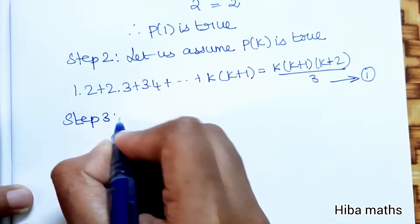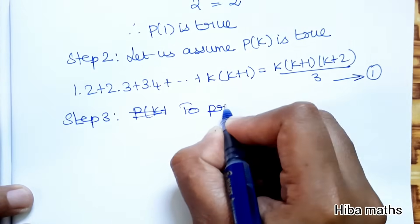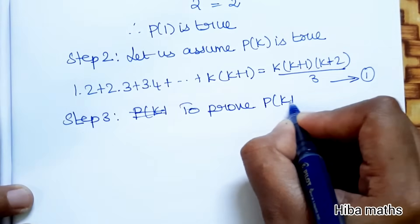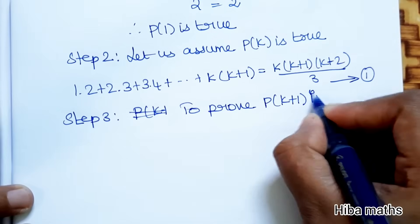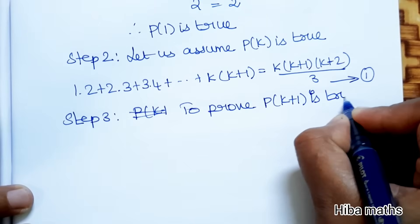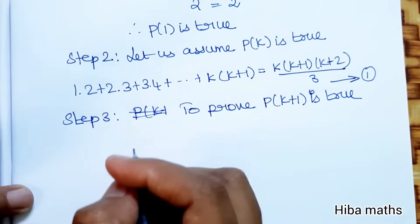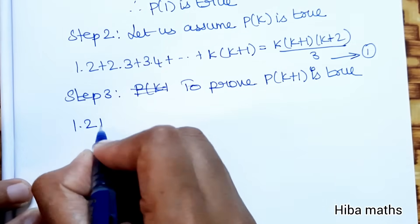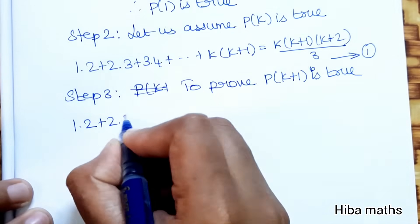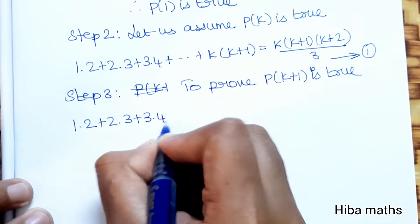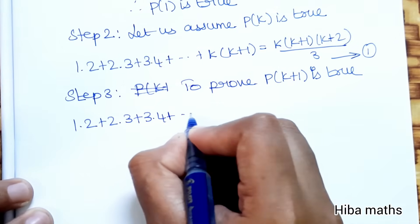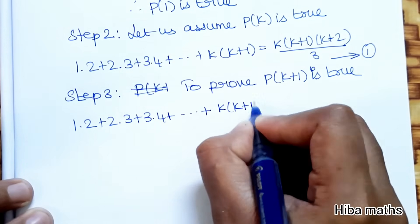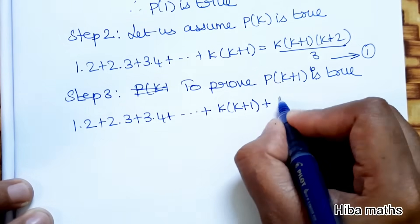Step 3: To prove P(k+1) is true. We need to show: 1·2 + 2·3 + 3·4 + ... + k(k+1) + (k+1)(k+2) = (k+1)(k+2)(k+3) / 3.